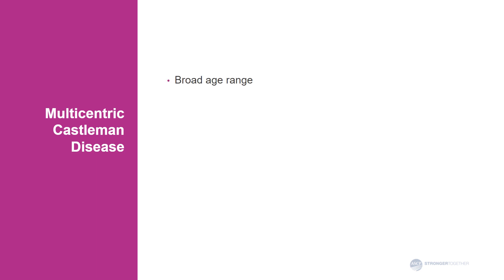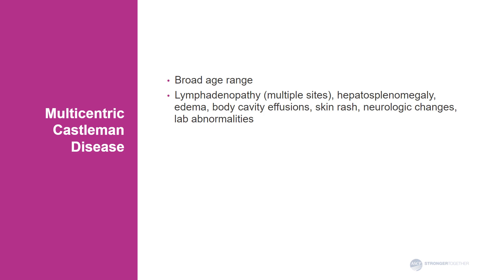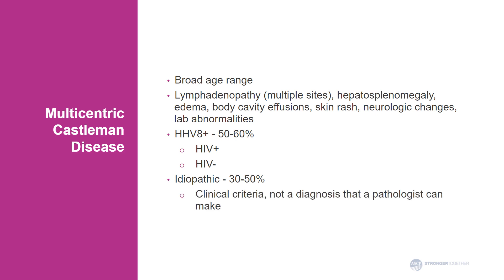Multicentric Castleman disease occurs over a broad age range. Patients present with lymphadenopathy of multiple sites, but also other signs and symptoms including hepatosplenomegaly, edema, effusions in body cavities, skin changes, neurologic changes, and different lab abnormalities. Patients with HHV8 positive Castleman disease can be HIV positive or HIV negative. Idiopathic Castleman disease, which is less common than the HHV8-associated form, is not a diagnosis that a pathologist can make because it requires that clinical criteria are fulfilled.